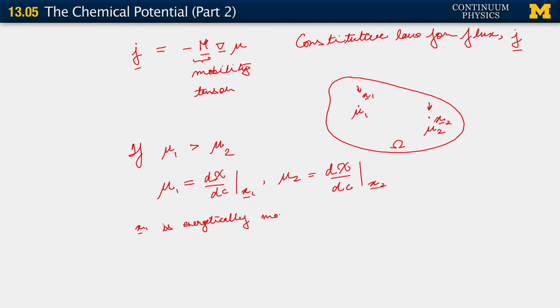Because delta chi at x1 which is mu 1 delta c is greater than delta chi at x2 which is mu 2 delta c. If you add a certain amount of material at the point x1, you increase the free energy more than if you add the same amount of material at the point x2.